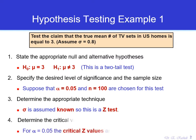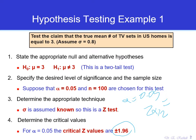The next step is to determine the critical values. Since alpha is 5% and our test statistic is a Z test, at 5% significance level with a two-tailed test, we have two critical values: plus and minus 1.96. This is based on Z of alpha over 2 for alpha equal to 5%. The critical value on the right tail is 1.96, and on the left it's negative 1.96. Based on these, we can draw our acceptance and rejection regions.